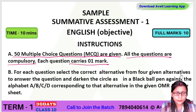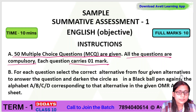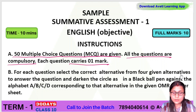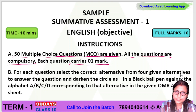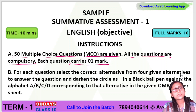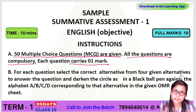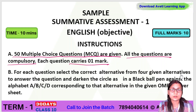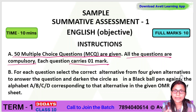You should darken the circle in black pen against the alphabet A, B, C, or D for the correct alternative in the given OMR sheet.